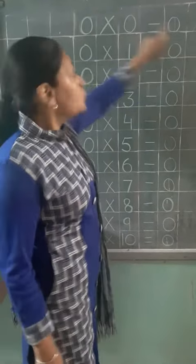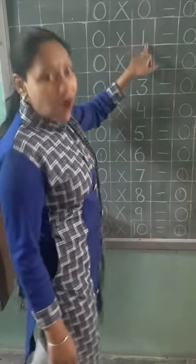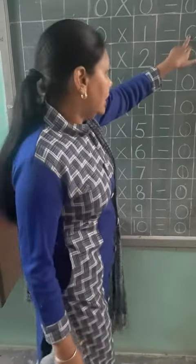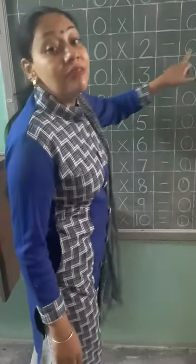Table of zero. Zero times zero is zero. Zero times one is zero. Zero times two is zero.